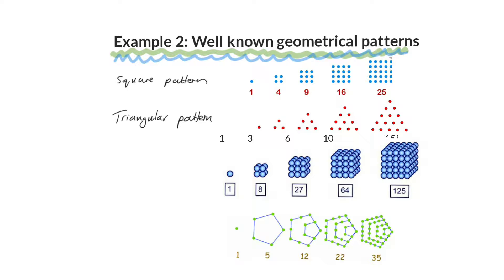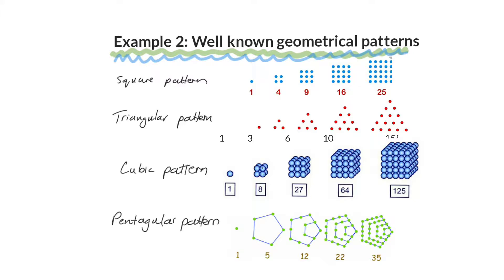The third pattern has one, four, eight, twenty-seven, sixty-four, one hundred and twenty-five dots — because it's cubic, these are the powers of three, and it's called the cubic pattern. The last one is interesting: it has one dot, then five, twelve, twenty-two, thirty-five — it's called the pentagonal pattern because it has five sides.